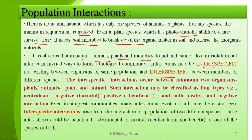This interspecific interaction occurs between a minimum of two organisms — it may be plant-animal, plant-plant, or animal-animal. Such interactions may be classified as: neutralism, negative (harmful), or positive (beneficial). Both positive and negative interactions exist even in the simplest community. These interspecific interactions arise from the interaction of populations of two different species, and may be beneficial, neutral, or detrimental.